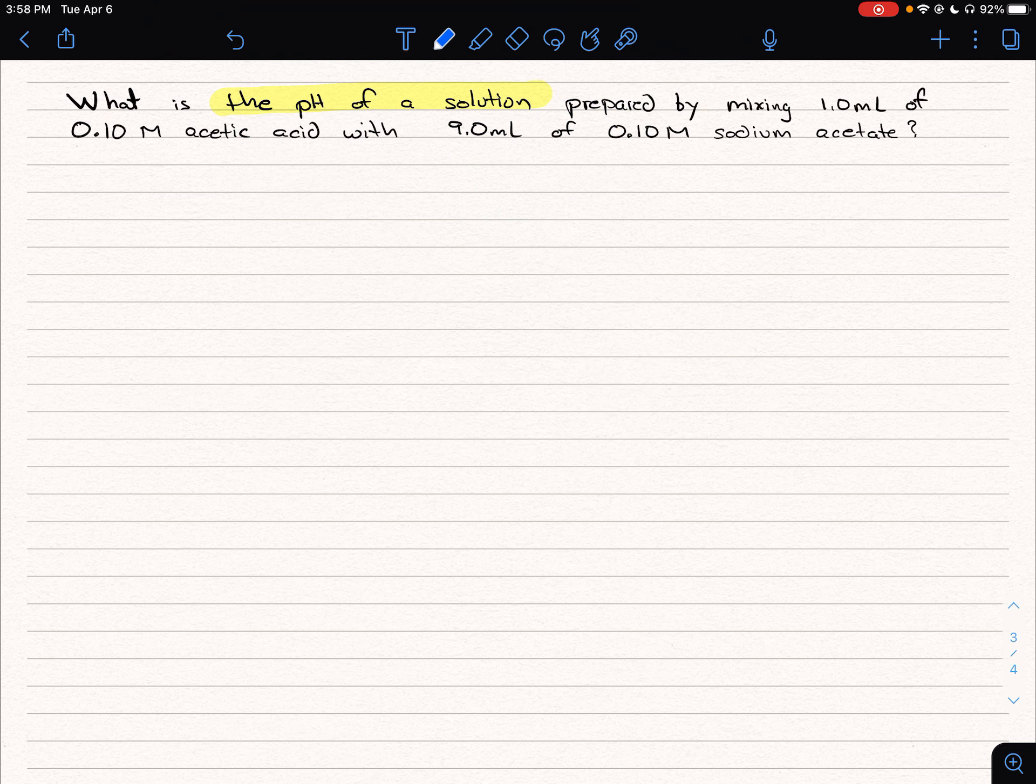Again, we're going to start with a chemical reaction. But one of the things we need to recognize is when we think about acetic acid, the formula is CH3COOH. And sodium acetate, the sodium is a spectator. So sodium is just Na+, and the acetate is CH3COO-.